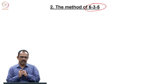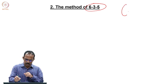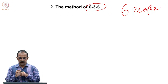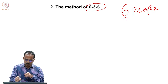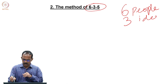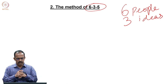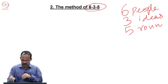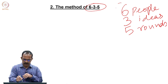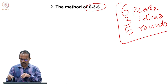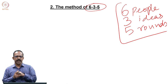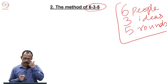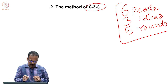To avoid this and to make it more detailed, there is another method called 6-3-5. The 6-3-5 method is used for idea generation to avoid some problems with brainstorming. We can actually do both brainstorming and 6-3-5 to get solutions. What is 6-3-5? It stands for 6 people, each one giving 3 ideas, and 5 rounds of idea generation.